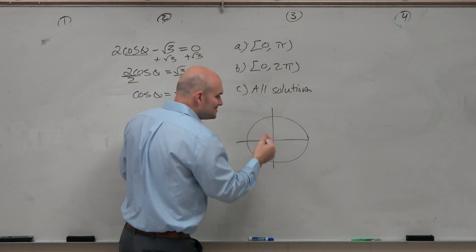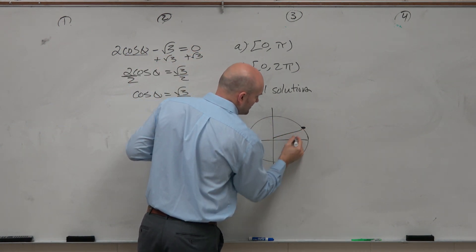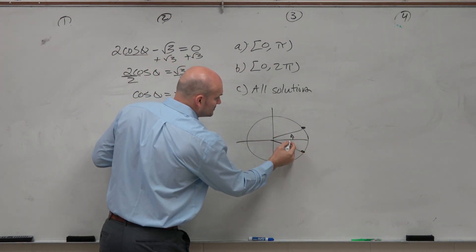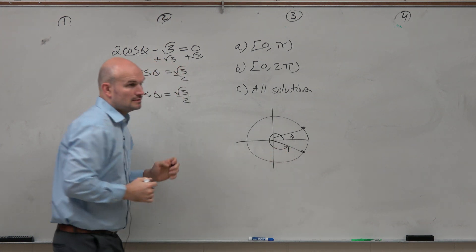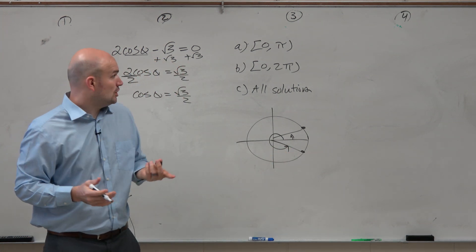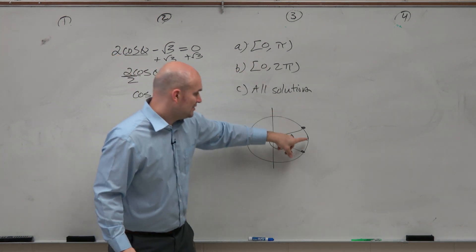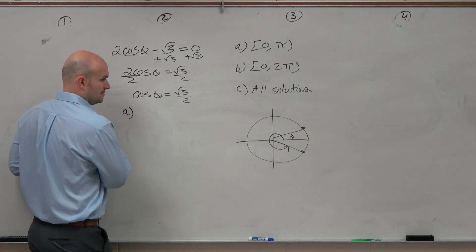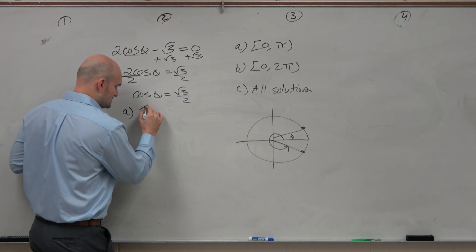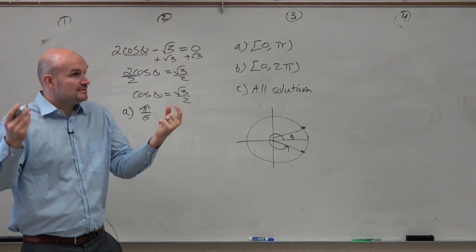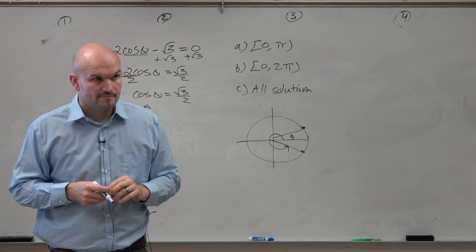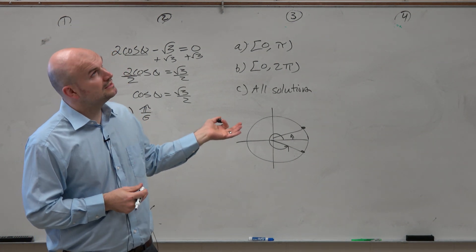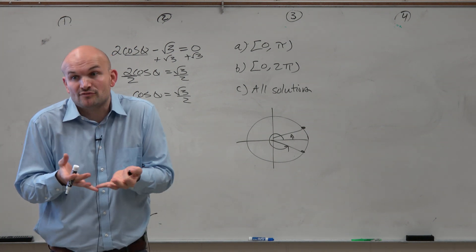The answer is π over 6. It's not going to equal π over 6 again until back over here. So the only solution on the interval 0 to π is π over 6 — just one answer. Even though 11π over 6 is also a solution, it's not on the restricted interval.